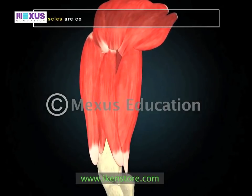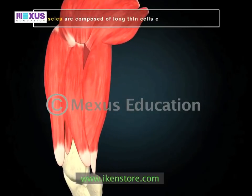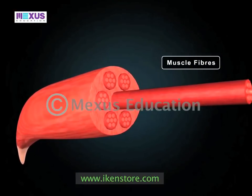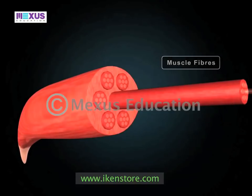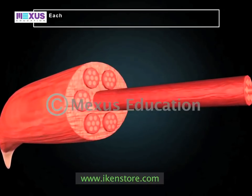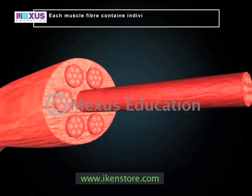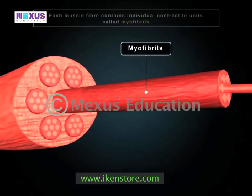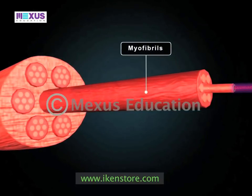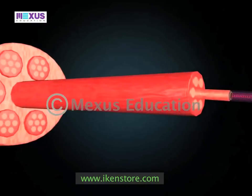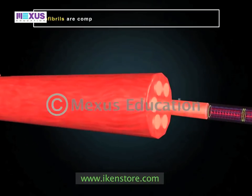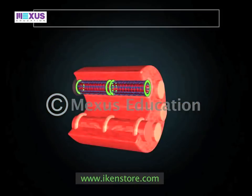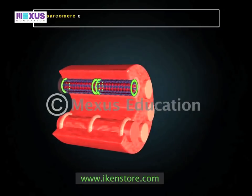Muscles are composed of long thin cells called muscle fibers. They are packed in bundles and run through the entire length of the muscle. Each muscle contains individual contractile units called myofibrils. Myofibrils are cylindrical multi-nucleated cells composed of smaller units known as sarcomeres.